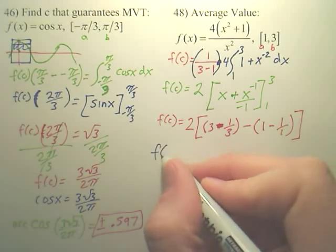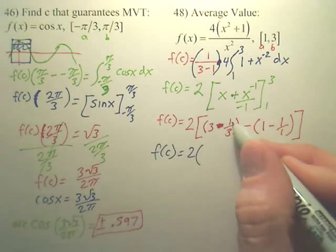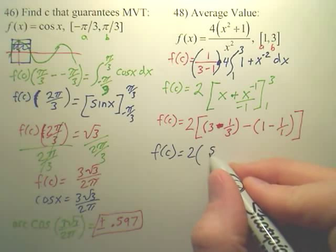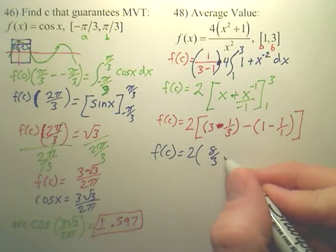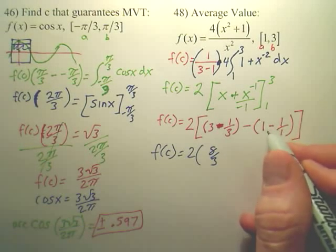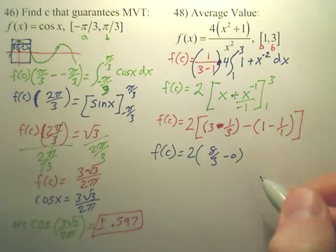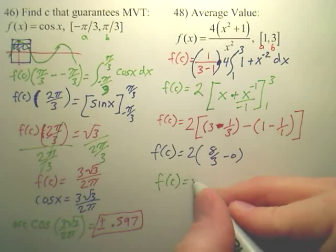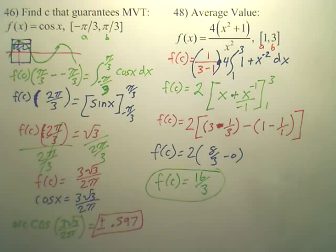So, your answer for f of c is going to be 2. And what's 3 minus 1 third? Well, isn't that 8 thirds? Does that look right? And then, isn't this going to be 0? So, isn't my answer 16 thirds? And isn't that what we're looking for? Average value. Isn't that the average height of your graph?